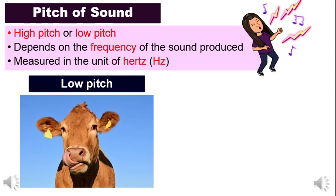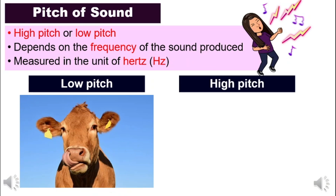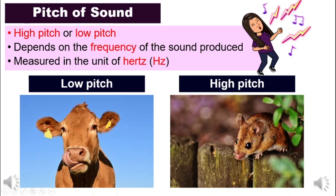A low pitch sound — one example is the sound made by a cow. That is a low pitch sound. A high pitch sound is produced by, for example, a rat or a mouse — that is a high pitch sound. Another example: the sound of a man — for example, 'I am very handsome' — that is a low pitch sound. A high pitch sound would be the sound of a lady — for example, 'I am very beautiful' — that is high pitch. So low pitch and high pitch have to do with frequency, whereas the loudness of sound has to do with amplitude.